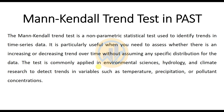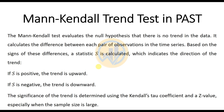pollutant concentration. The Mann-Kendall test evaluates the null hypothesis that there is no trend in the data. It calculates the difference between each pair of observations in the time series. Based on the signs of those differences, a statistic S is calculated which indicates the direction of the trend. If S is positive, the trend is upward; if S is negative, the trend is downward. The significance of the trend is determined using the Kendall tau confidence coefficients and a Z-value, especially when the sample size is large.